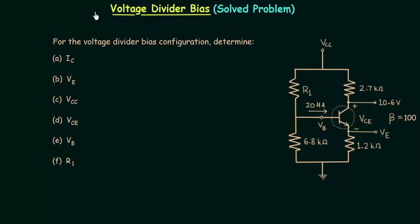In this lecture we will solve one problem based on voltage divider biasing. In this problem we need to calculate six parameters that you can see on your screen.